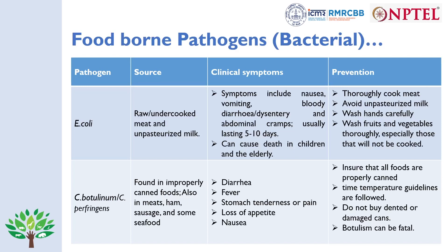E. coli common sources are raw or undercooked meat and unpasteurized milk. Clinical symptoms include nausea, vomiting, bloody diarrhea or dysentery, and abdominal cramps lasting five to ten days; it may cause death in children and the elderly. Prevention includes thoroughly cooking meat, avoiding unpasteurized milk, washing hands carefully, and washing fruits and vegetables — especially those that will not be cooked.